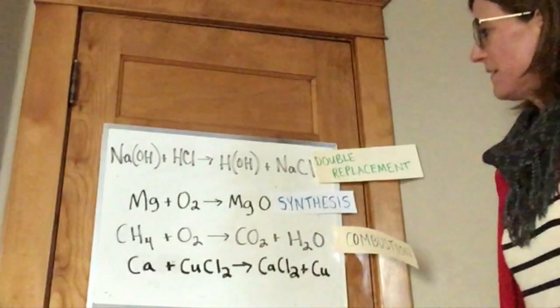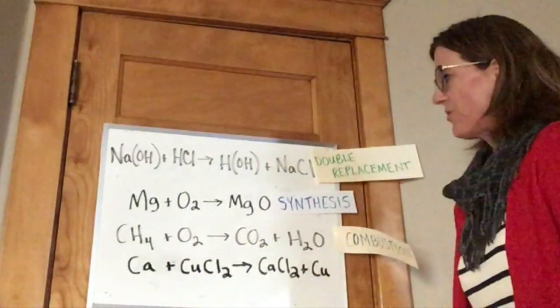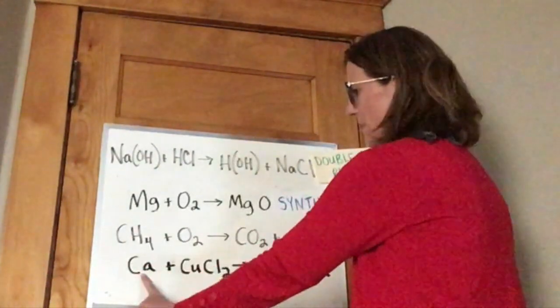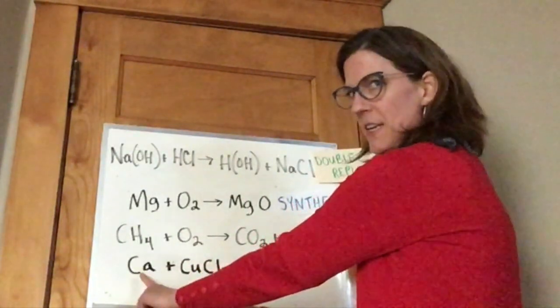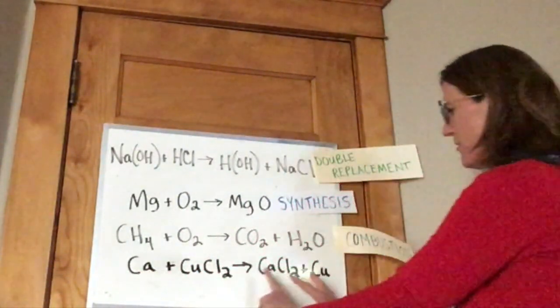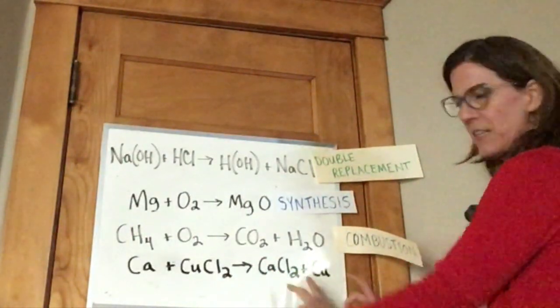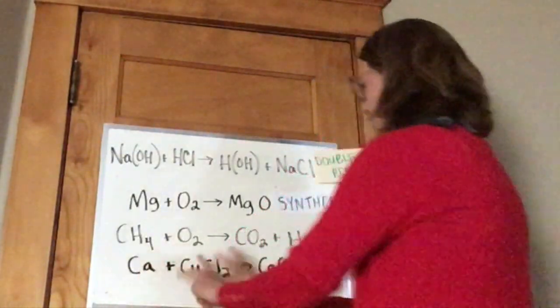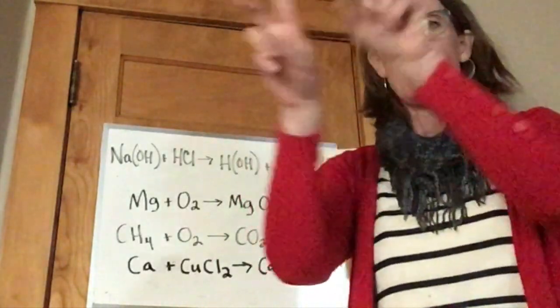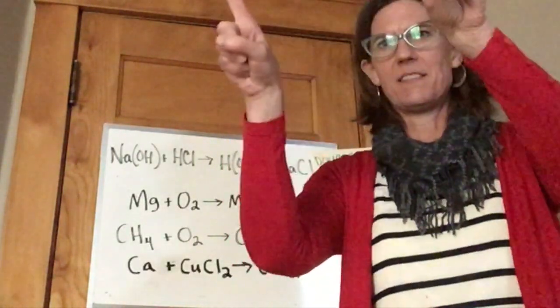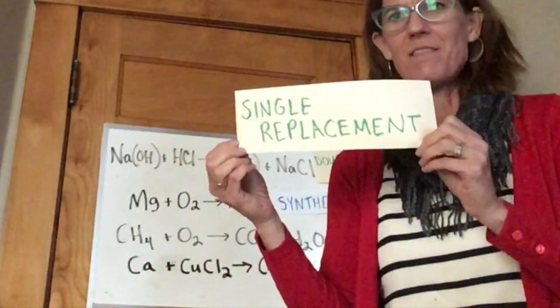All right. How about this one? Take a look at it. And if you're struggling, use your fingers. We have a single element, one capital letter, plus a compound. And then they are switching partners, but we still have an element and a compound. So it's element and compound, switching partners, element, compound. So what is that one? If you said single replacement, you are right.